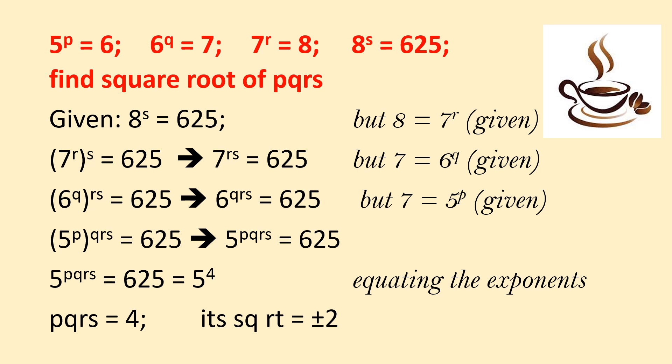We get 6 power QRS. Replace 6 with 5 power P. We get 5 power PQRS. This is 625, or 5 power 4. Equating the exponents, PQRS is 4.